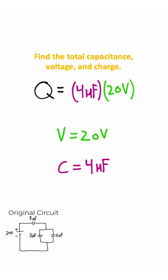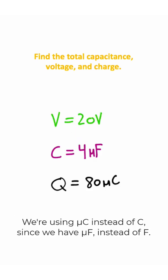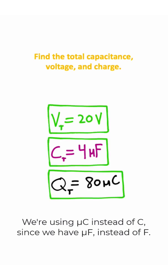So we take our voltage and capacitance, plug it into this equation, and if we have four microfarads times 20 volts, we should get 80 microcoulombs. So that's your total charge, total voltage, and total capacitance on this circuit.